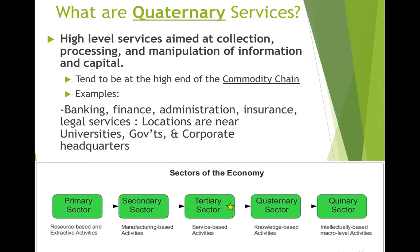Two types of services not always covered in the book are quaternary and quinary — both are sub-categories of tertiary. As a reminder, primary refers to resource-based extractive activities like mining and agriculture; secondary is manufacturing-based; and tertiary is service-based, with quaternary and quinary underneath it.